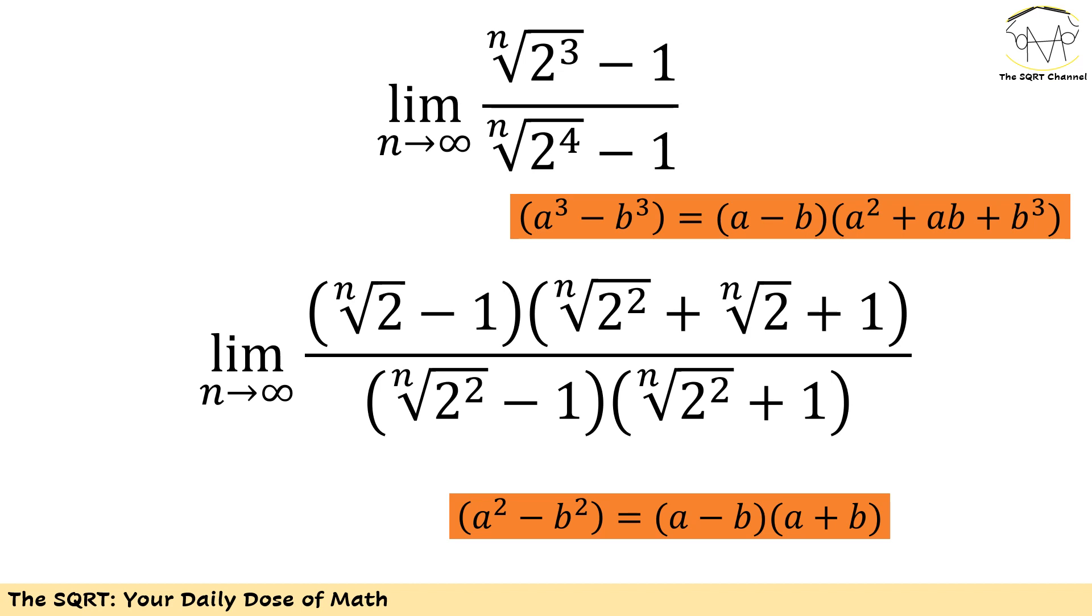For the bottom of this fraction I'm going to use similar ideas but different identities. I'm going to rewrite the nth root of 2 to the power of 4 minus 1 as the nth root of 2² minus 1 times the nth root of 2² plus 1. This is based on the identity that a² minus b² can be simplified as (a - b)(a + b).